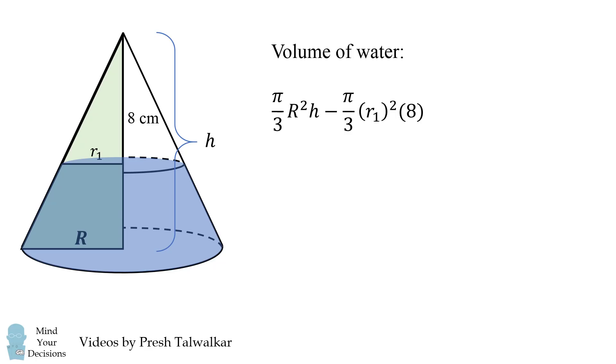Now we can simplify this formula a little bit by using similar triangles. The large triangle and the small triangle are similar to each other. Therefore, the ratio of each leg to each height is the same. So we have r1 over 8 is equal to r over h, which means r1 is equal to 8r over h.